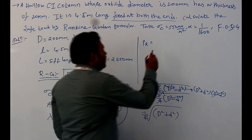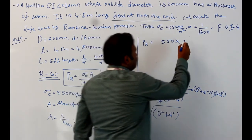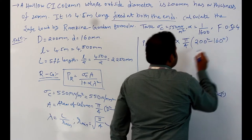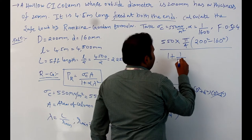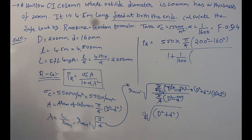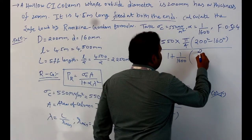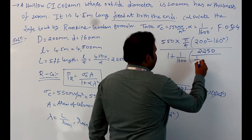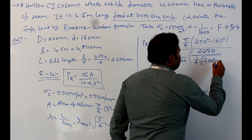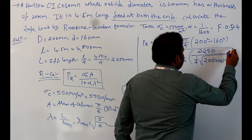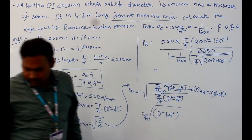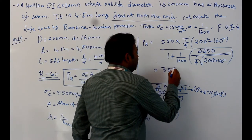Substituting all values into the Rankine-Gordon formula: sigma_c is 550 newton per mm square, A equals pi by 4 into 200 squared minus 160 squared, alpha equals 1 by 1600, effective length is 2250 mm, and R_minimum equals 1 by 4 into square root of 200 squared plus 160 squared. Solving this entire numerical gives P_R equal to 3510 kilonewton.